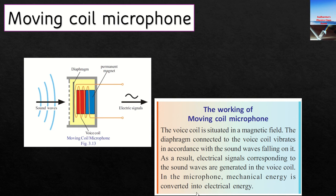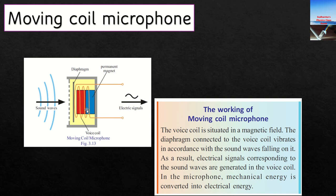In the microphone, mechanical energy is converted into electrical energy. The vibrations according to our sound create a change in magnetic flux. You can see a permanent magnet and a diaphragm in the diagram. The diaphragm vibrates, creating an induced EMF — the mechanical energy that makes the coil vibrate produces the induced EMF.